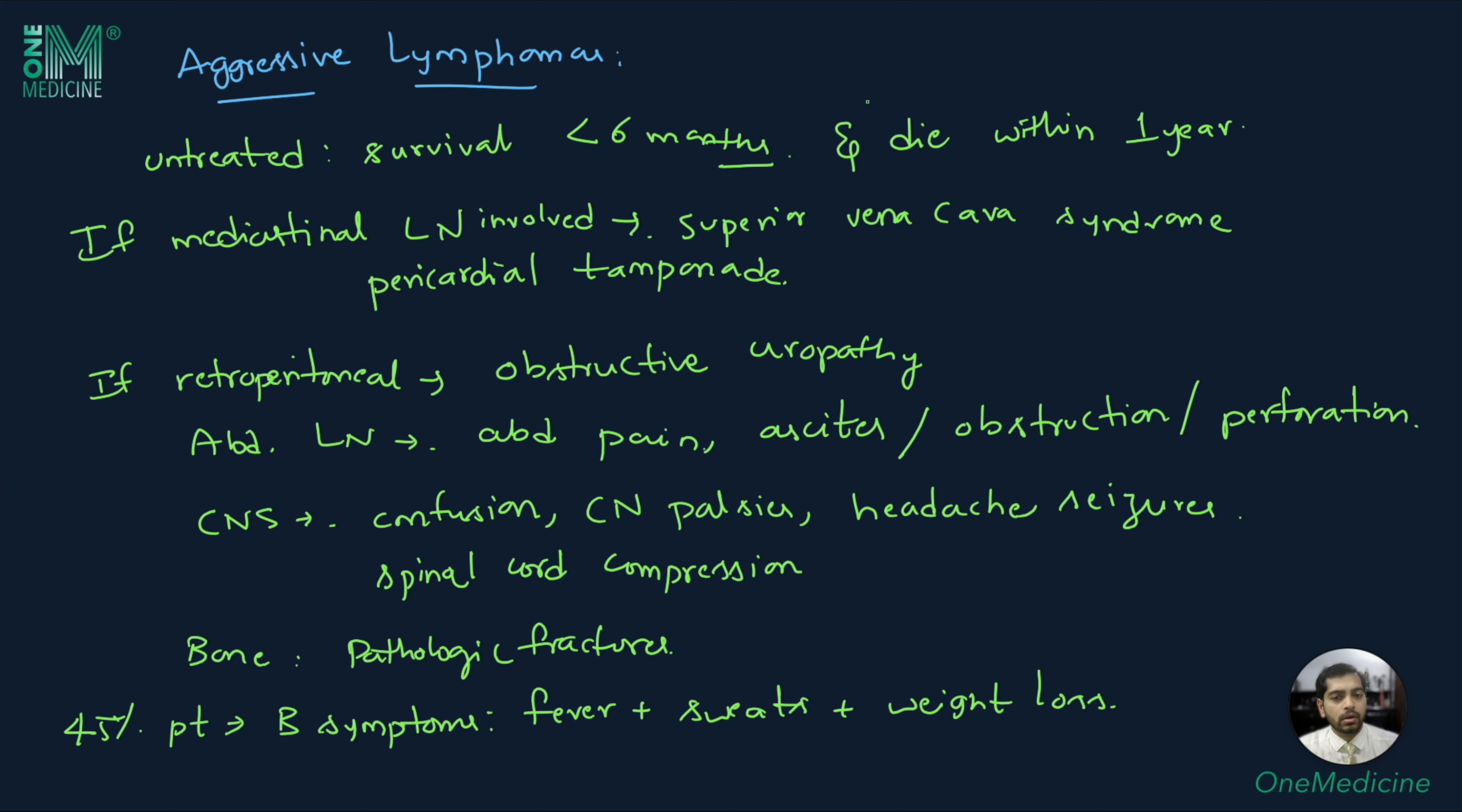However, patients can also be asymptomatic, leading to a delay in diagnosis. Among the aggressive lymphomas, the most common diagnosis is diffuse large B cell lymphoma. This accounts for up to 35-45% of patients.